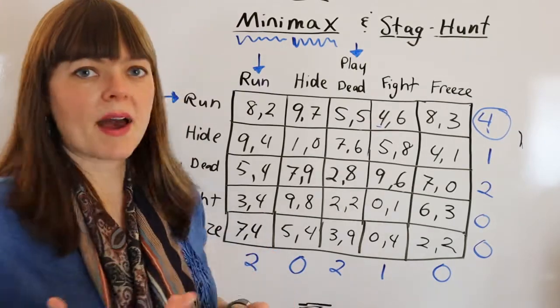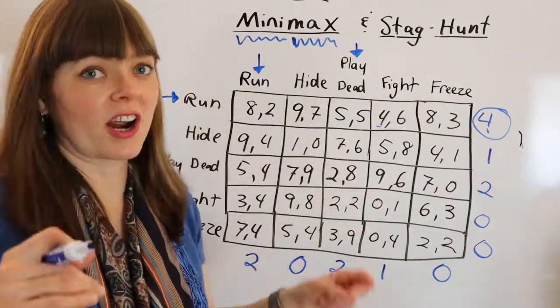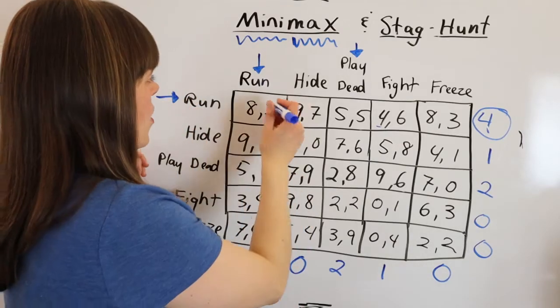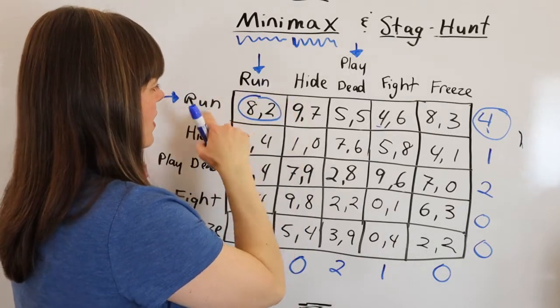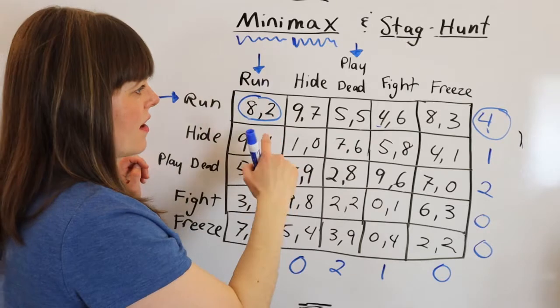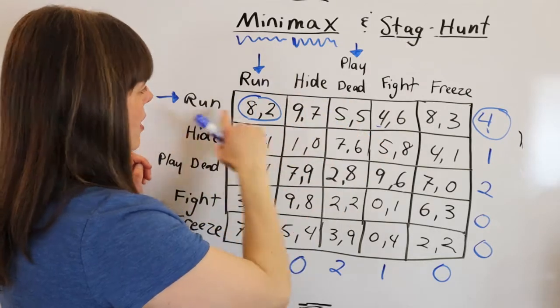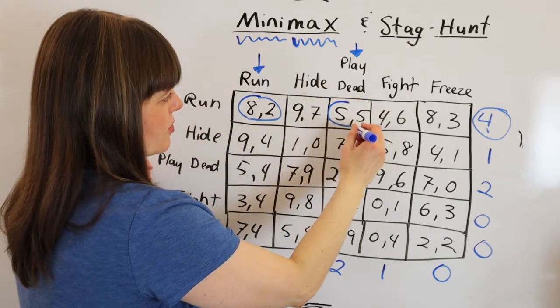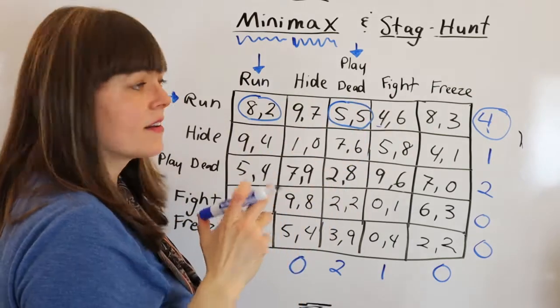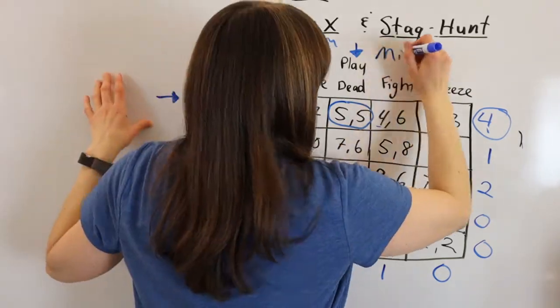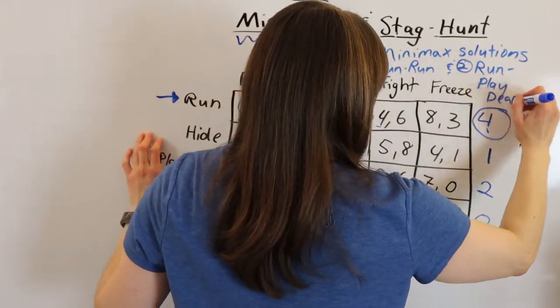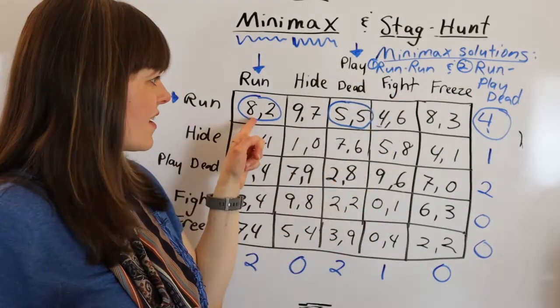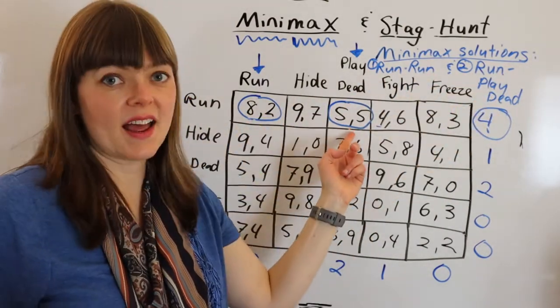So the minimax solution to this game, there are actually 2 minimax solutions. One is for player 1 to go run, player 2 to go run. And then the other is for player 1 to go run, and player 2 to play dead. So let me write that out. So the 2 minimax solutions here are run, run, and run, play dead.